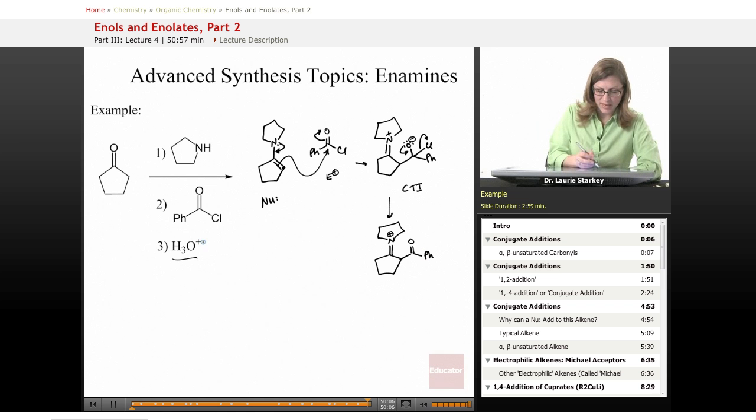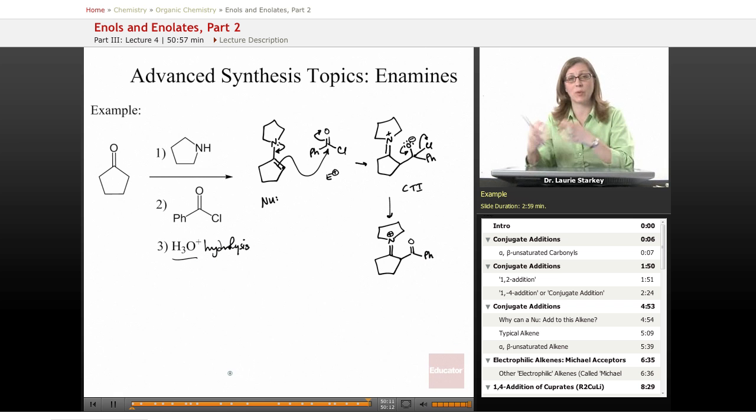And then our last step here, we're going to do hydrolysis. So an enamine is something that we create temporarily to use and activate it and make it like an enolate. And then we take that nitrogen back out. So that's what makes it a synthetic equivalent.